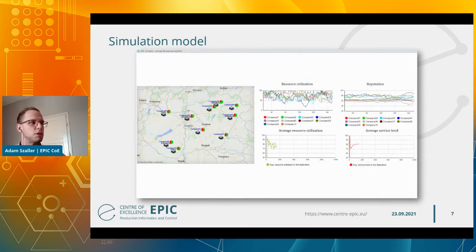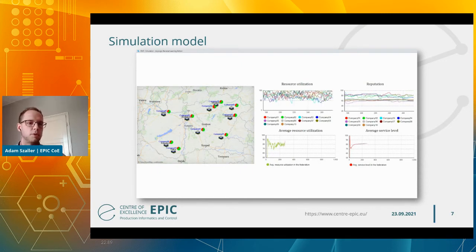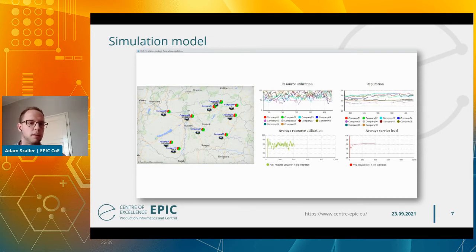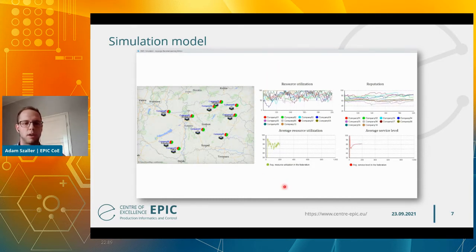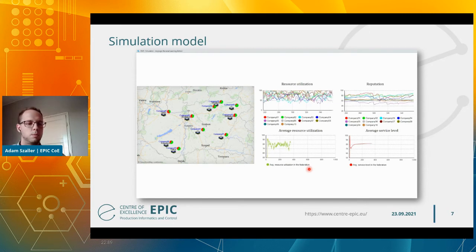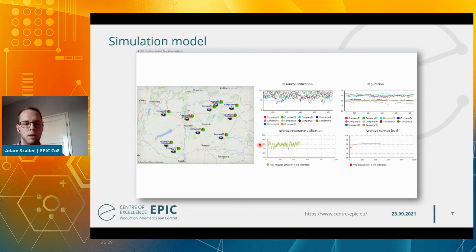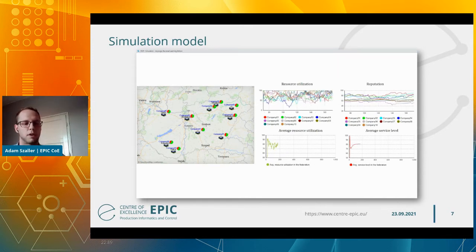You can see here the simulation model of this network. The aim of the simulation model was to provide an experimentation tool for investigating different scenarios. In this case, 10 company agents were placed on the map of Hungary, and individual resource utilizations and reputation values are visualized during the model run. The average resource utilization and service level — meaning the extent to which deadlines have been met — are also presented. The green parts of the pie charts visualize the actual resource utilization level of the companies.